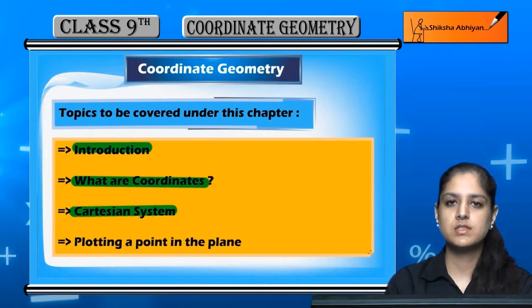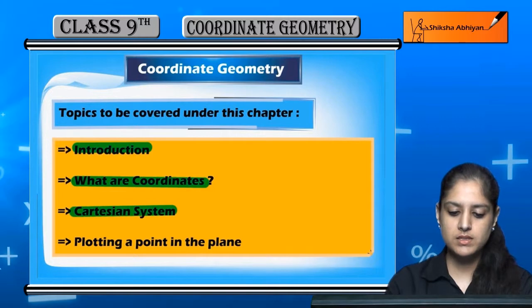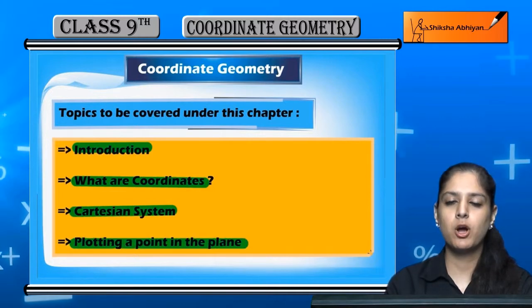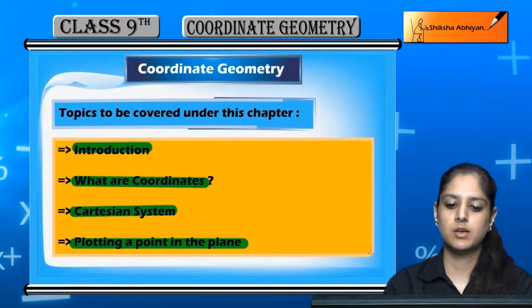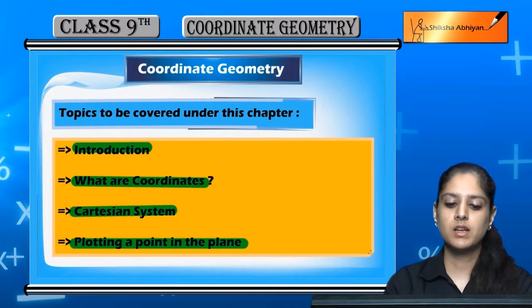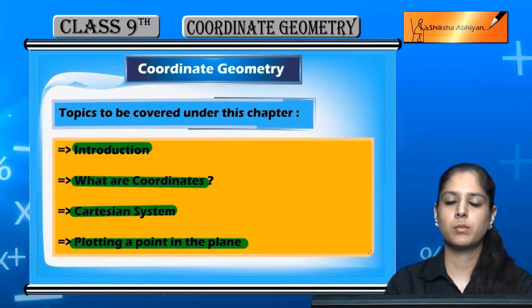After that, we will study the Cartesian system, and finally we will see how a point is plotted on a plane. So these are the 4 topics we will cover in this chapter, starting with the introduction.